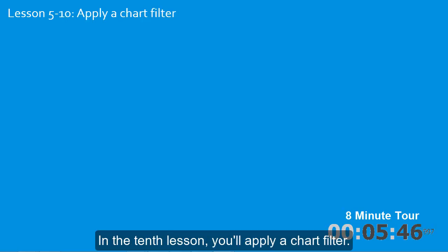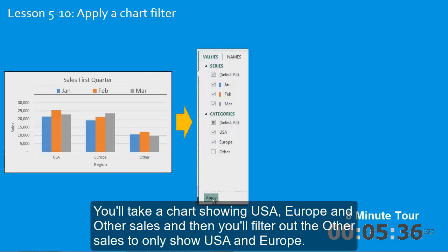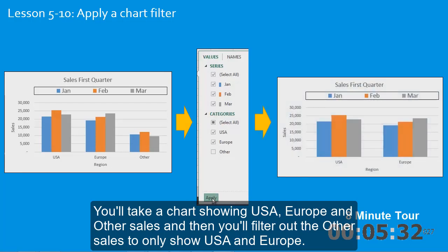In the tenth lesson you'll apply a chart filter. This is another brand new Excel 2013 feature. You'll take a chart showing USA, Europe and other sales, and then you'll filter out the other sales to only show USA and Europe.